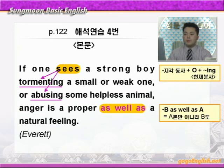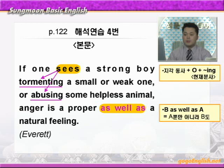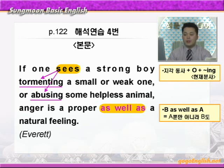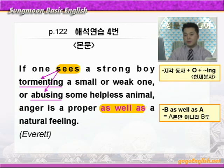또는 'abusing some helpless animal' — abusing도 동사 see의 목적보어로 쓰인 것입니다. abuse는 '학대하다' 혹은 '남용하다' 이런 뜻인데 여기서는 목적어로 animal이 나오니까 '학대하다' 이런 뜻이 되겠어요. helpless는 무기력한 이런 뜻이니까 어떤 무기력한 동물을 학대하는 것을 보면. 'anger is a proper as well as a natural feeling' — anger는 분노, proper는 올바른·마땅한. 'B as well as A' 하면 'A뿐만 아니라 B도' 이런 뜻이죠. 분노는 당연한 감정일 뿐만 아니라 올바른 감정이다.